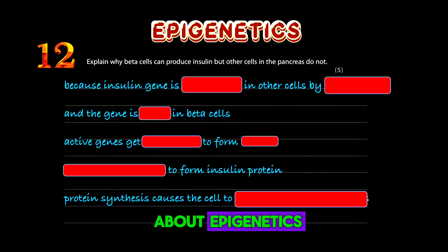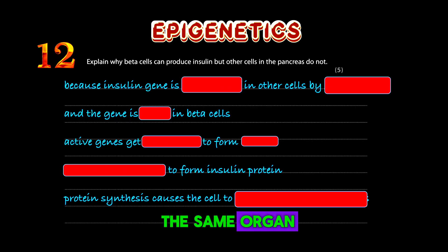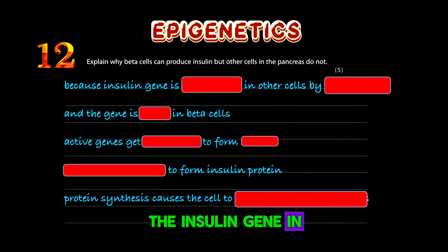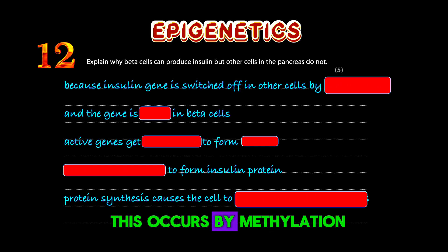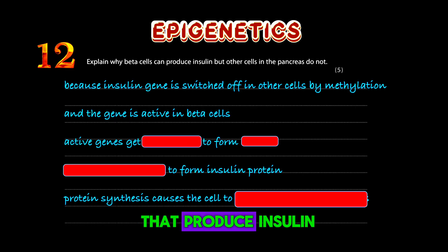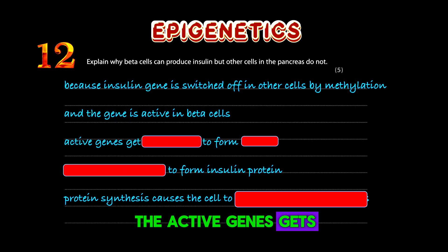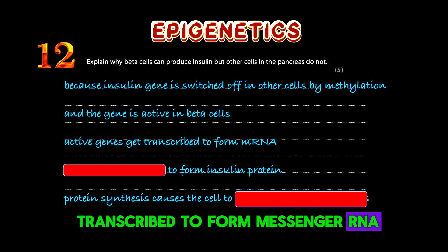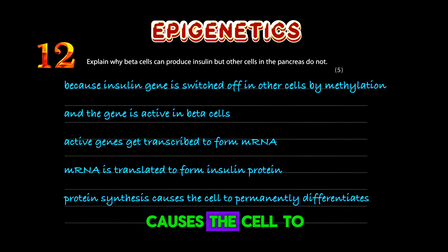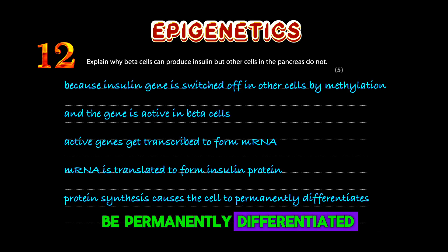Here's a typical question about epigenetics. The question is asking how can cells in the same organ — in this case the pancreas — produce different types of proteins. The insulin gene in other cells of the pancreas is turned off, and this occurs by methylation, while this gene is active in the cells that produce insulin. The active gene gets transcribed to form messenger RNA, which gets translated to form proteins. Finally, protein synthesis causes the cell to be permanently differentiated.